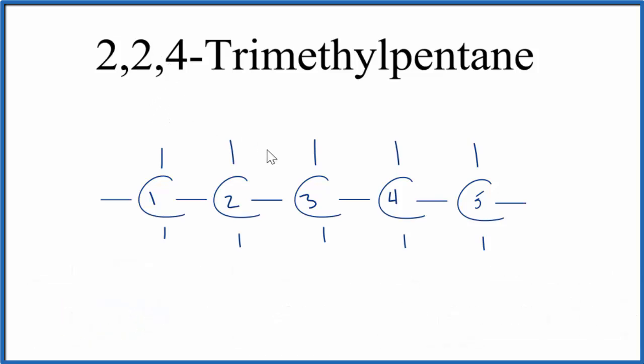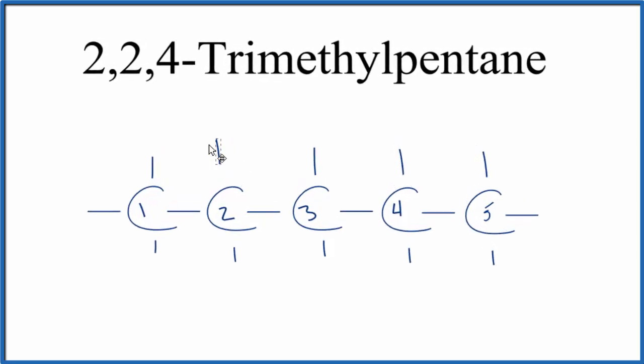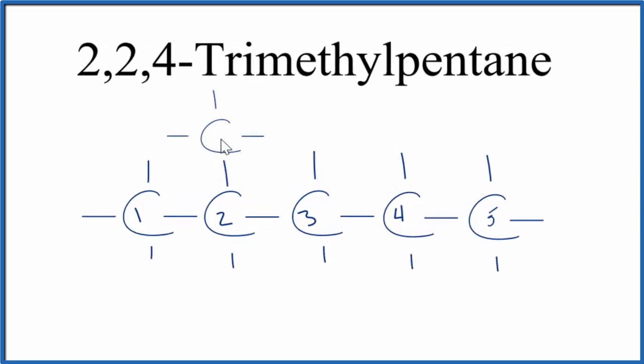Let's put a methyl group here. We'll essentially replace this with a methyl group. So we have one methyl group on the second one. But remember, it's 2, 2, so let's put another methyl group down here. So now we have 2, 2-dimethylpentane.